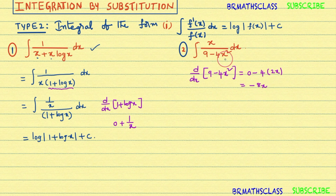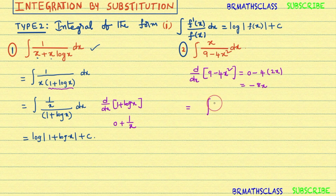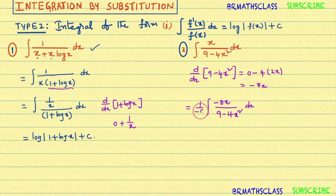But in the numerator, only x is there — the factor of −8 is missing. We know −8 is a constant, so we can adjust for it. We multiply numerator and denominator by −8, giving us the integral of (−8x)/(9 − 4x²) dx, with a factor of −1/8 outside.